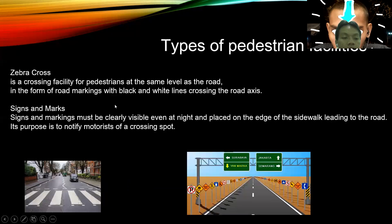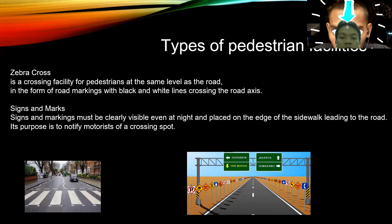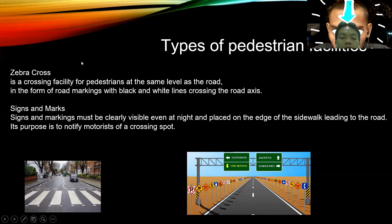Three: zebra crossing. A zebra crossing is a crossing facility for pedestrians at the same level as the road, in the form of road markings with black and white lines crossing the road axis. Four: signage and markings. Signage and markings must be clearly visible even at night and placed on the edge of the sidewalk leading to the road. Their purpose is to navigate pedestrians to the crossing spot.